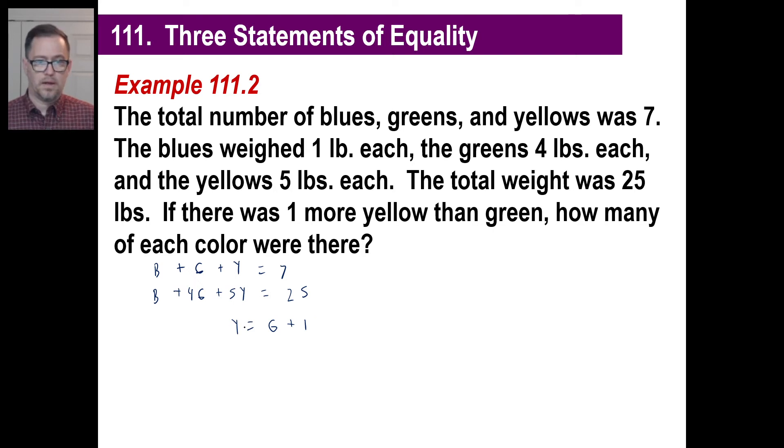So blues are one, so we have 1 times blues. The greens are four, plus 4 times the greens. And the yellows are five, 5 times the yellows, and that equals 25. The number of yellows is the same number as the number of greens plus one. Let's do it. We have y equals g plus one. Let's just put g plus one right there. So B plus g plus g plus one is seven. So we have b plus 2g plus one equals six. And we'll do the second one.